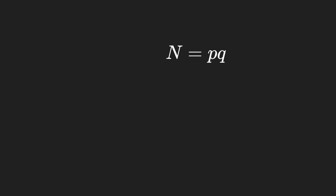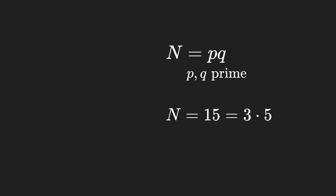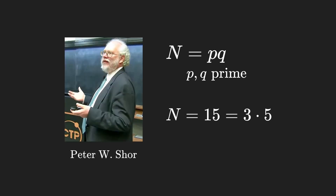Let's say you have some natural number n, which is the product of two unknown prime numbers p and q. How would you find what p and q are? For a small number like 15, you may quickly notice that p and q are 3 and 5. But what if n had hundreds of digits? Shor's algorithm is the only known efficient algorithm for factoring n and relies on quantum computing for being efficient.